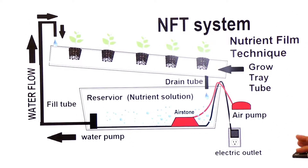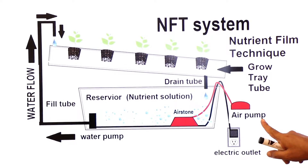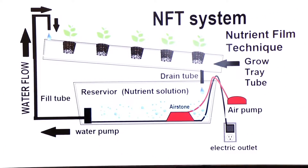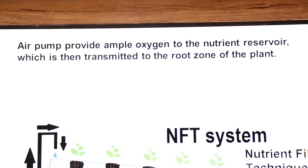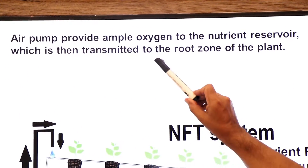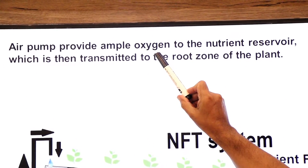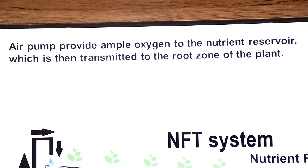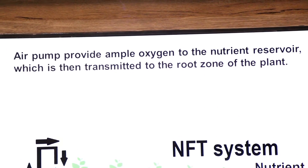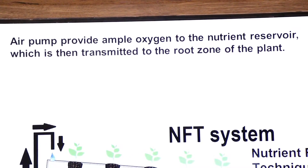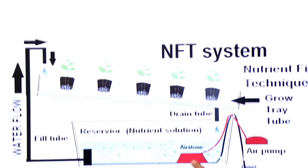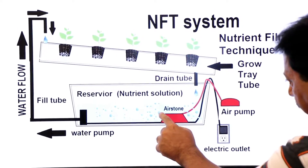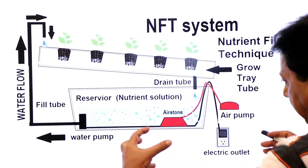What is the function of the air pump in a hydroponics kit? The air pump provides ample oxygen to the nutrient reservoir, which is then transmitted to the root zone of the plant. Air stones are present which create bubbles of oxygen that mix with the reservoir nutrients.